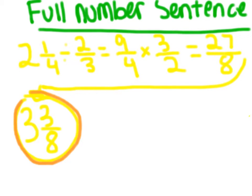So the full number sentence is 2 and 1 fourths divided by 2 thirds, which also equals 9 fourths times 3 halves, which equals 27 eighths, which would equal 3 and 3 eighths.